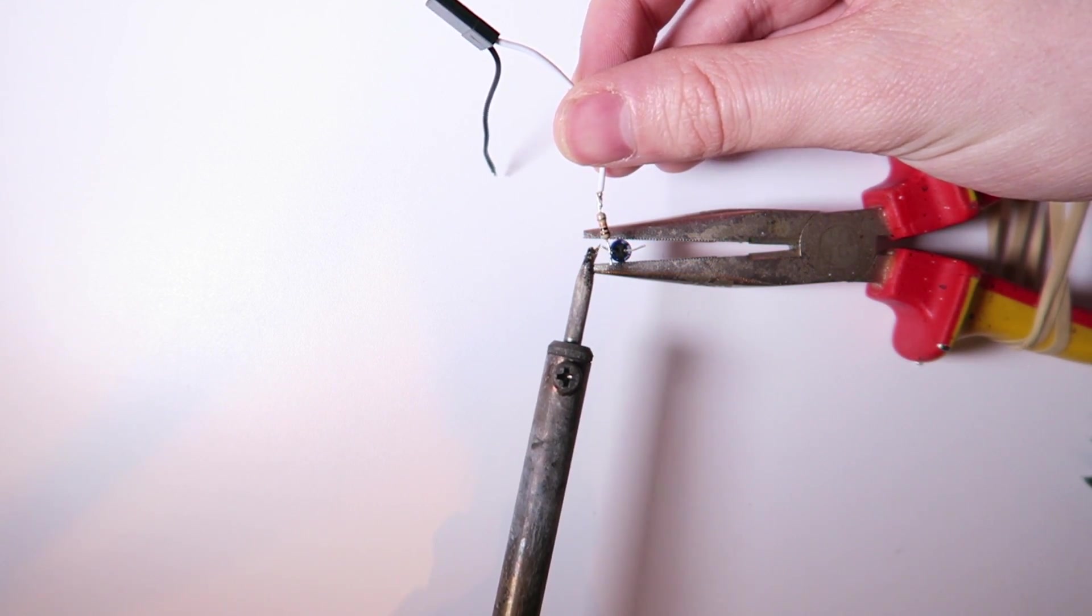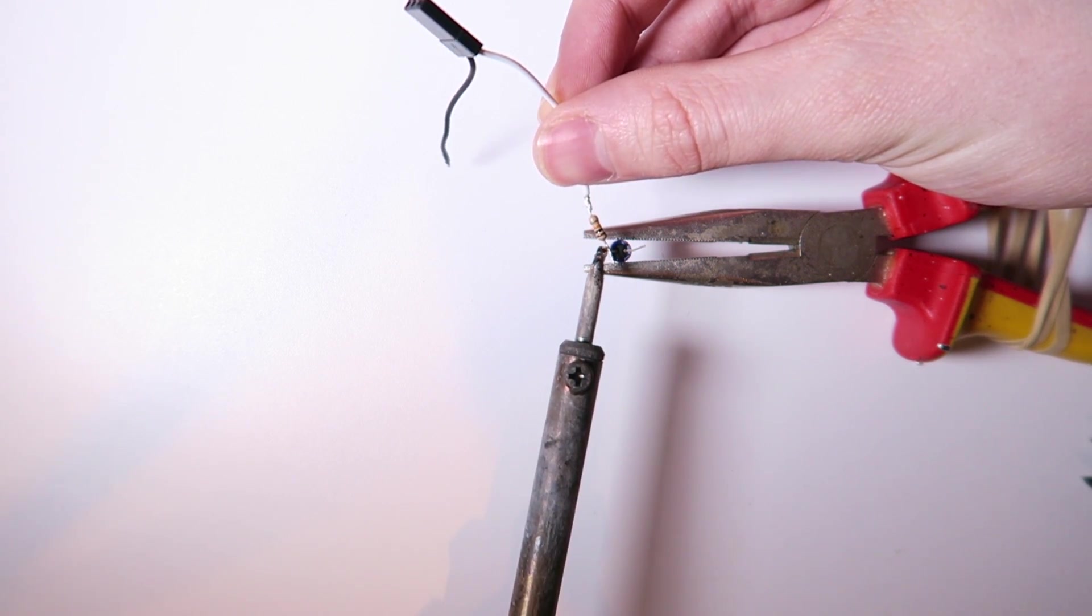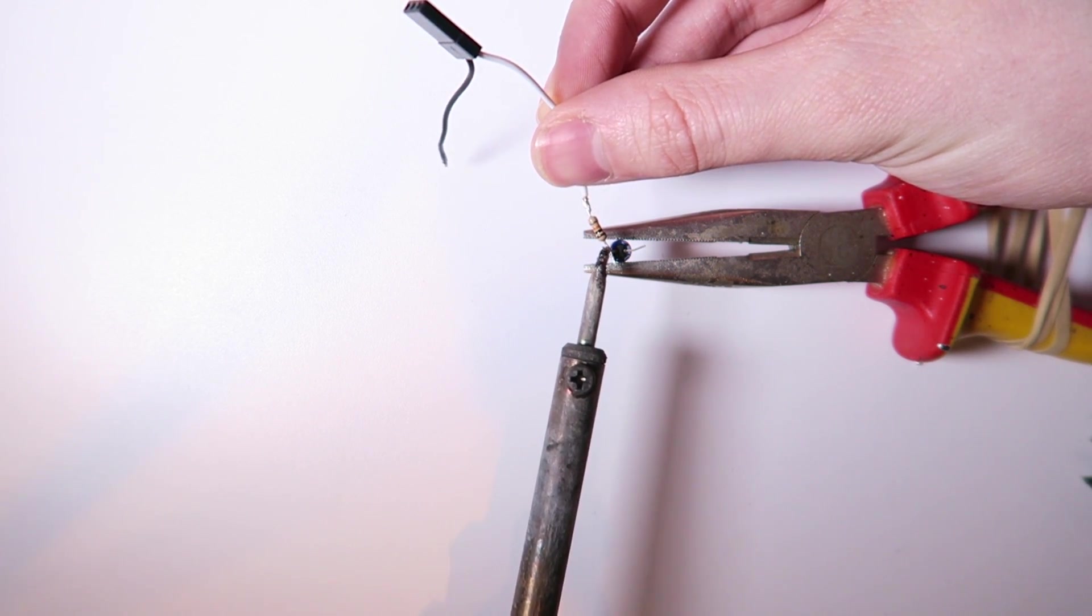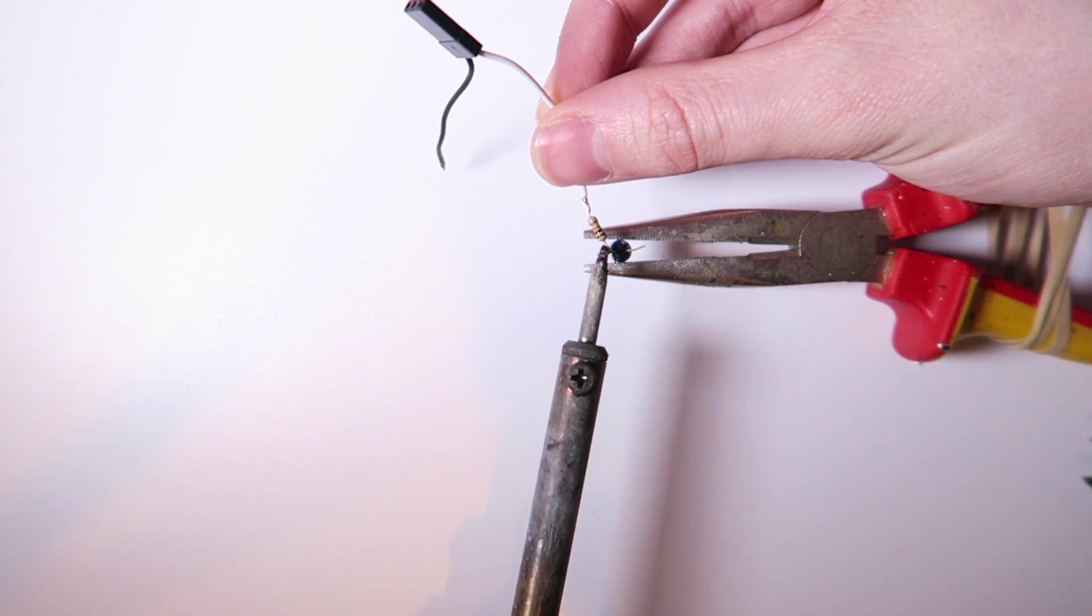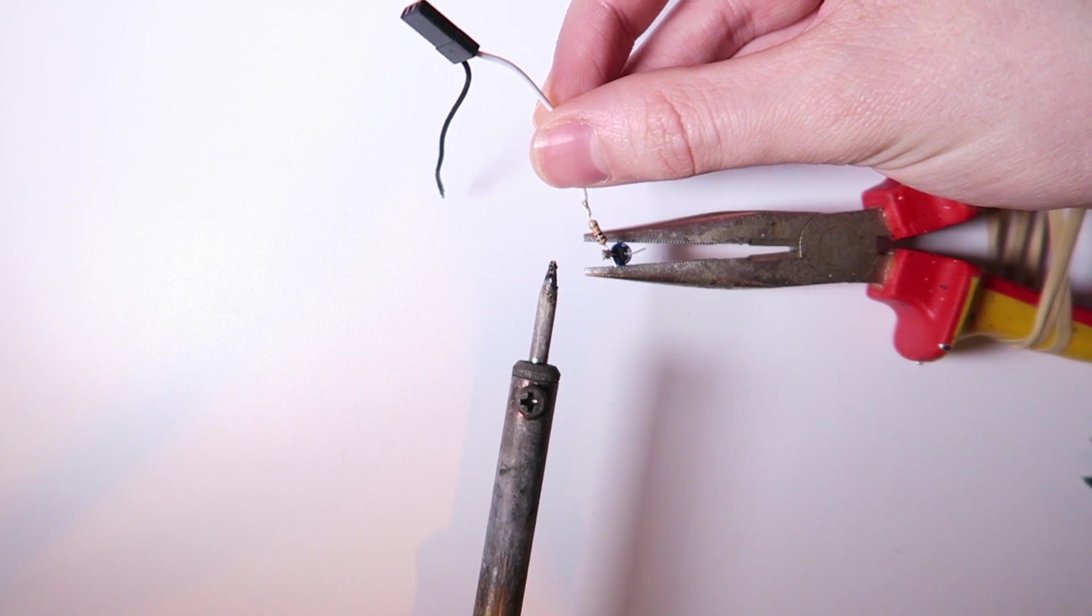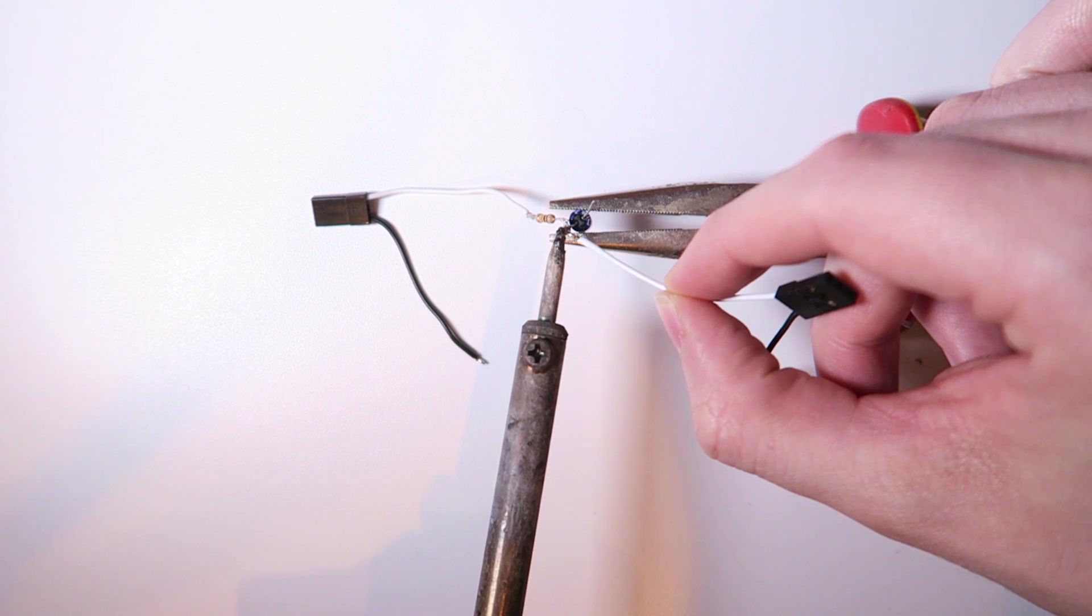This signal wire is going to solder onto the positive side on the capacitor. The way to know that is there is a line on the negative side. So I'm soldering this in there, just leaving enough room so that I can solder the other wire onto the other end without it falling off.